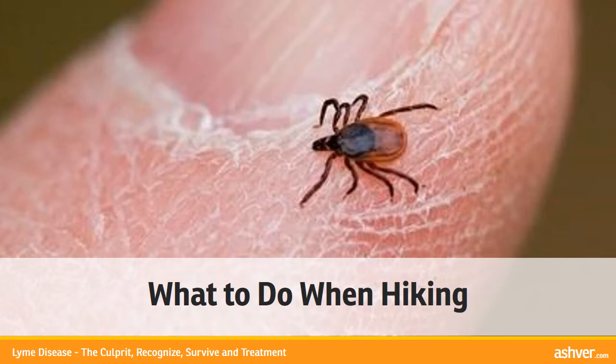What to do when hiking: wear white or light-colored clothing so you can spot ticks easily against the light background. Keep your body covered — wear long-sleeve shirts that button at the wrist, long pants, and socks. Tuck pants into socks to prevent ticks from crawling up your legs. Check each other thoroughly when you return from the hike.